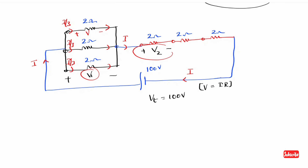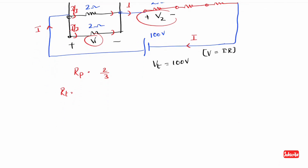Look at this: the 3 parallel branches are equal, and the parallel combination of 3 equal resistors gives equivalent resistance. The total equivalent resistance calculation: 1/R_parallel = 1/2 + 1/2 + 1/2 = 3/2, so R_parallel = 2/3 Ω. The next series resistors are 2Ω, 2Ω, 2Ω. So R_total = 2/3 + 2 + 2 + 2 = 2/3 + 18/3 = 20/3 Ω.